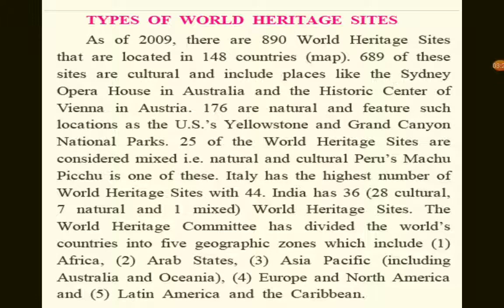689 of these sites are cultural and include places like the Sydney Opera House in Australia and the historic center of Vienna in Austria. 176 are natural and feature such locations as the US Yellowstone and Grand Canyon National Parks. 25 of the World Heritage sites are considered mixed — that is, natural and cultural — and Peru's Machu Picchu is one of these.